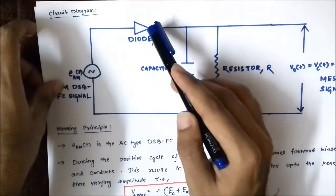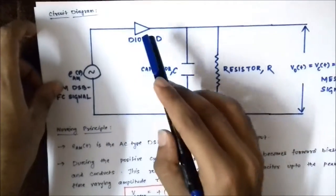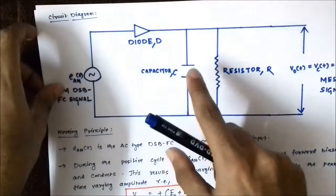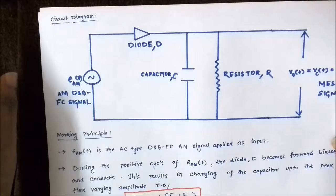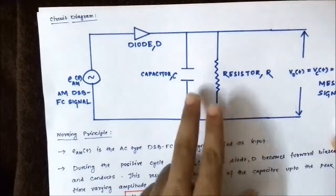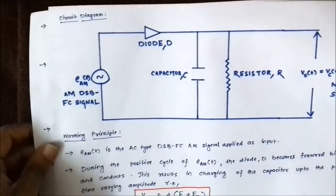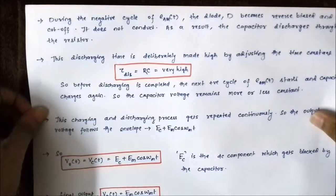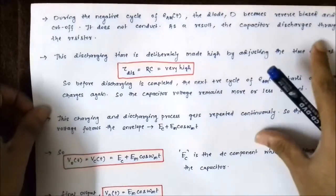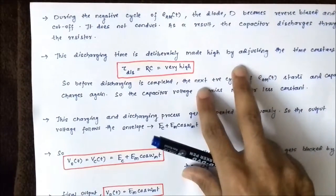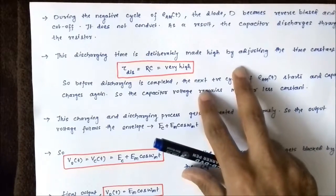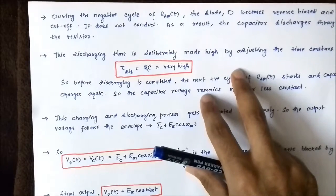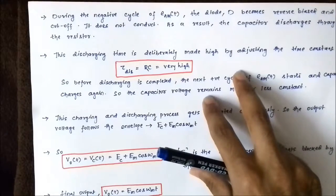During the negative half cycle, the P-end of the diode is connected to the negative terminal and the N-end to the positive terminal, so the diode is reverse biased and becomes an open circuit. In that case, the capacitor discharges through the resistor. The discharging time is deliberately made very high — the capacitor takes a long period of time to discharge. This is done by adjusting the discharging time constant RC, selecting the resistor and capacitor values so that the discharging time is very high.